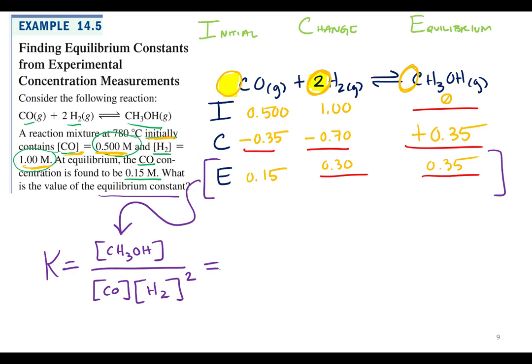So methanol's 0.35 all over CO 0.15 times 0.3 squared.